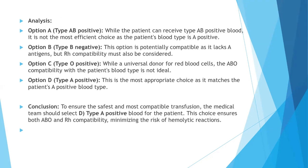Analyzing the options: Option A, type AB positive — while the patient can receive it, it is not the most efficient choice. Option B, type B negative — potentially compatible as it lacks A antigens, but Rh compatibility must also be considered. Type O positive, while a universal donor for red blood cells, is not ideal for ABO compatibility here. Type A positive is the most appropriate choice as it matches the patient's blood type, ensuring both ABO and Rh compatibility and minimizing the risk of hemolytic reactions.